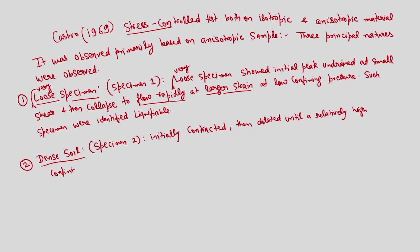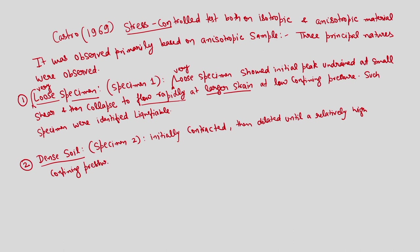In the case of dense samples, initially the sample contracted, started taking load, followed by dilation, and subsequently there was an increase in confining pressure as well. This is because dense samples subjected to external loading undergo increase in void ratio due to dilation. Whenever there is increase in void ratio, there will be a reduction in pore water pressure, resulting in increase in confining pressure. This procedure continues to very high confining pressure and very large axial strain.